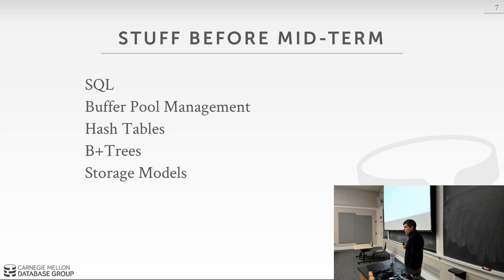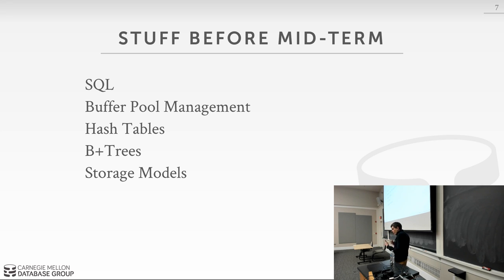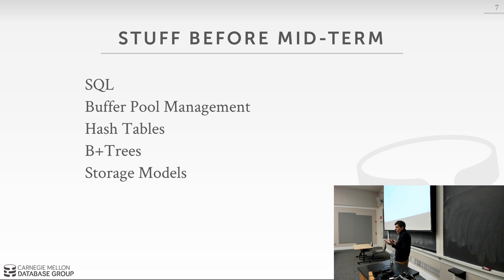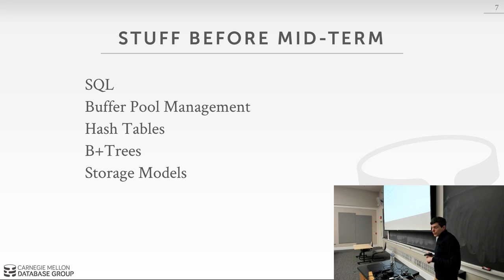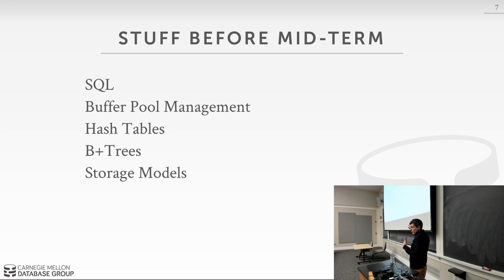What do you need to know from the content we discussed before the midterm? I'm listing five topics at a high level — I'm not going to ask specific details like how a hash table handles overflows. You need to be aware of what these things are and how they fit into the overall system. Topics include buffer pool management, B+ trees, concurrency control, storage models like column store versus row store, and SQL — if you magically forgot SQL, you're in trouble.